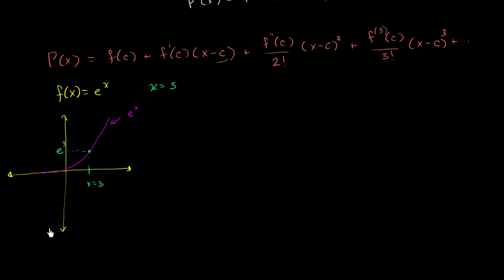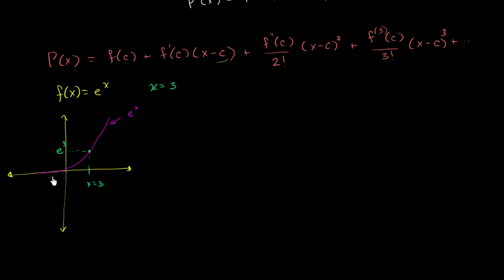When we take the Taylor series expansion, if we have a zero degree polynomial approximating it, the best we could probably do is have a constant function going straight through e to the third. If we do a first order approximation — a first degree term — it will be the tangent line. As we add more and more degrees, we should hopefully be able to converge with the curve better and better. We'll talk more about testing for convergence in the future, but let's just apply the formula we got intuition for in the last video.